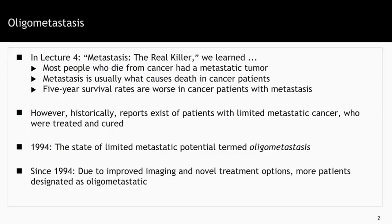In an earlier lecture titled 'Metastasis the Real Killer', we learned that in patients with cancer who die, it's usually the metastasis that kills them. This was shown in a five-year survival table which compared those with and without metastasis. In every type of cancer, those with metastasis had a significantly worse five-year survival rate.